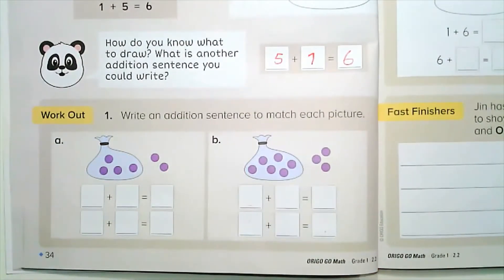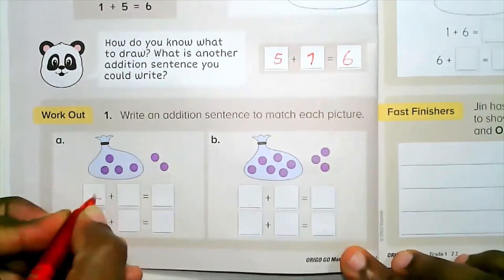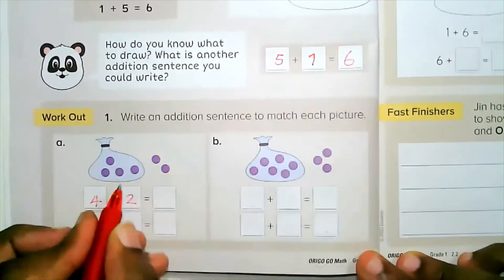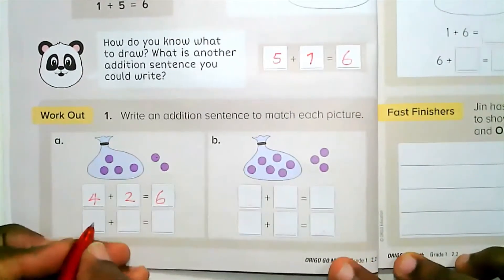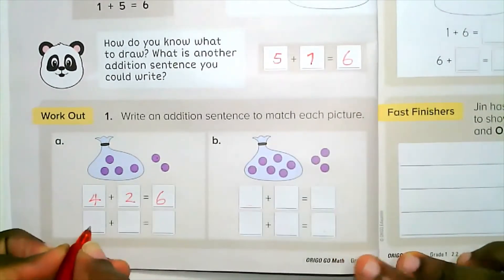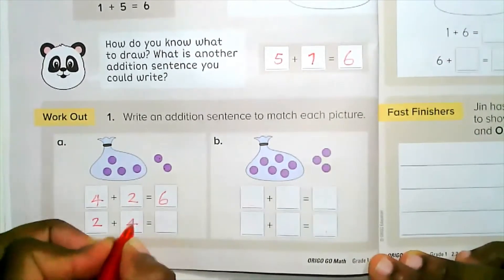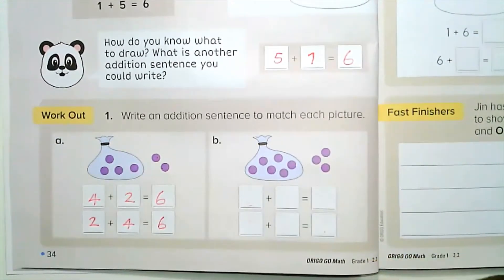Number one: write an addition sentence to match each picture. We have four, so we write four plus two. Count on: four, five, six — that is six. We can also write it as two plus four makes six.